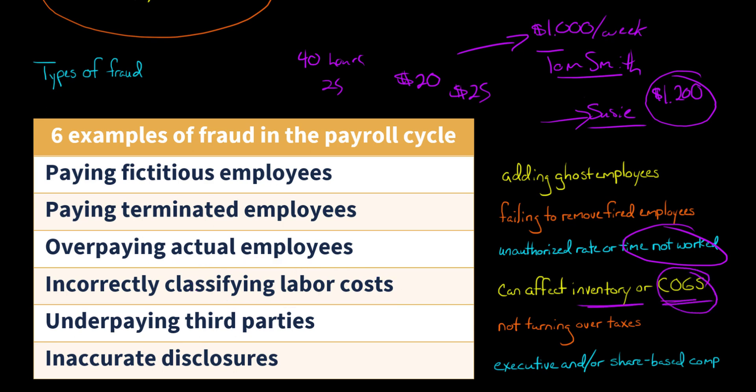And if it's affecting cost of goods sold, it could affect net income. Underpaying third parties is another concern — there are a number of third parties to whom money is withheld from the employee's check and then remitted. For example, federal income tax in the United States: if an employee does some work, the company withholds federal income tax, and if the employee is subject to state income tax, they withhold that as well.